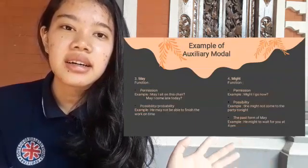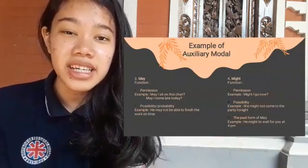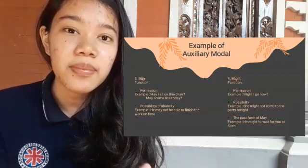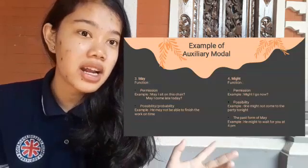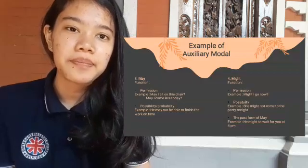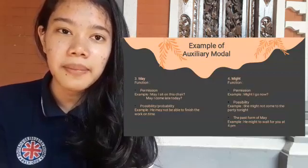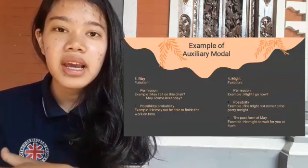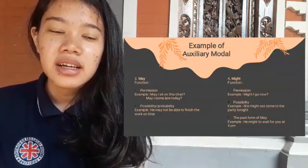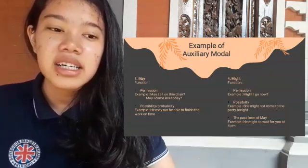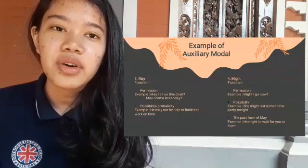Next is May and Might. May and Might have the functions of permission and possibility or probability. For permission, for example: 'Might I sit on this chair?' or 'Might I come late today?' For possibility: 'He may not be able to finish the work on time.' Might has the functions of permission, possibility, and is the past form of May.